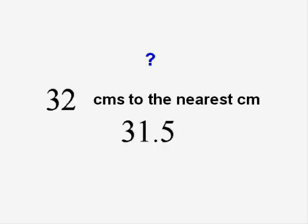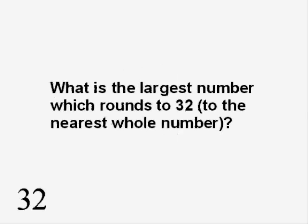However, what's the most it could have been? Well, the answer is 32.5 but that may be slightly confusing. So what we've got to think about is what is the largest number which rounds to 32? In other words, the largest number which rounds down to 32 if you're rounding to the nearest whole number.